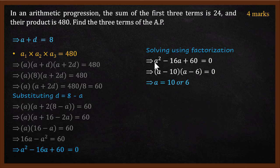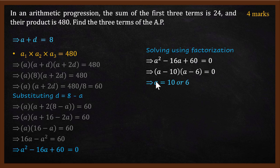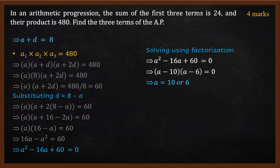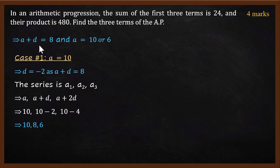Factorizing a squared minus 16a plus 60 equals 0: we find two numbers that multiply to 60 and add to minus 16, which are minus 10 and minus 6. So we get a minus 10 times a minus 6 equals 0, giving a equals 10 or a equals 6. We know a plus d equals 8, so we can now find d for each case.